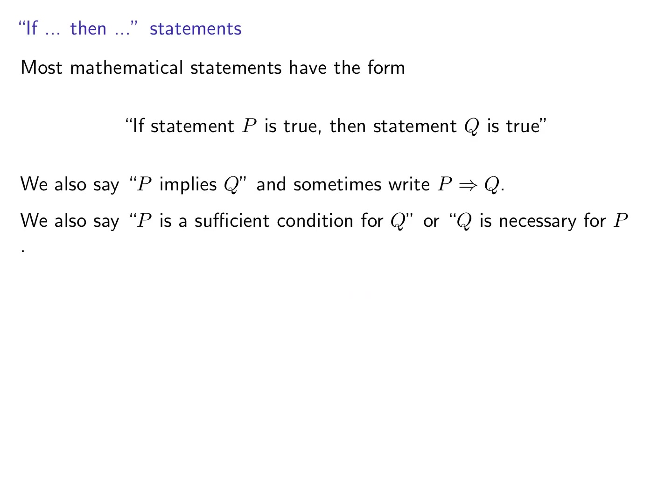You have seen this in the previous video — the if-then statements. Most mathematical theorems or mathematical statements have the following form: if statement P is true, then statement Q is true. We also sometimes say 'P implies Q,' written with this double arrow notation. You can also read it as 'P is a sufficient condition for Q,' or 'Q is necessary for P.'